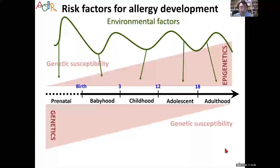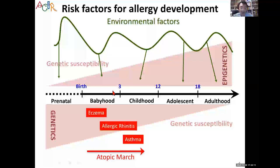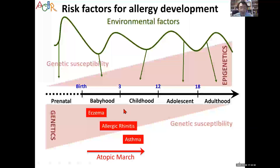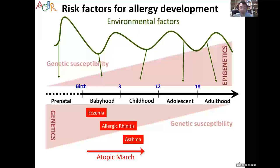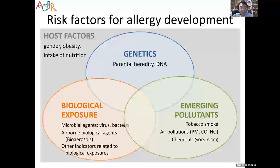Allergy disease develops very early in life. Around six months of age, if children have suffered Type 2 immune deviation, they develop atopic dermatitis. During early childhood, this is largely a genetic effect, but after that, environmental insults such as infection, vaccination, and air pollution induce more mucosal inflammation and cause more allergy disease to emerge.